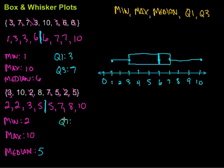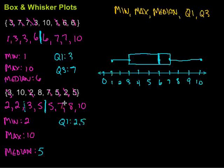Then I need to find the quartiles again. The first quartile is the median of the lower half of the data set. The lower half is two, two, three, with the middle falling between two and three, so the first quartile is 2.5. The third quartile is the median of the upper half — halfway between seven and eight — which gives us 7.5.